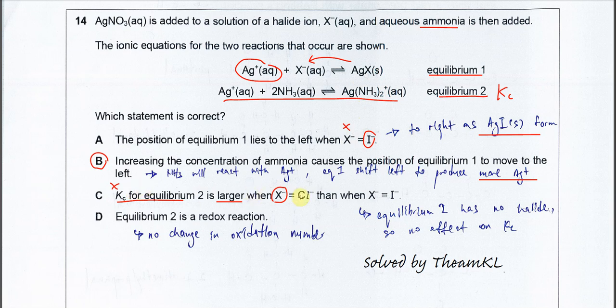Option D states equilibrium two is a redox reaction. The oxidation number of silver ion is +1 on both the left-hand side and right-hand side, and nitrogen and hydrogen remain the same. Therefore, D is also wrong. The answer is B. Thank you.